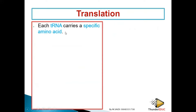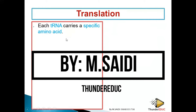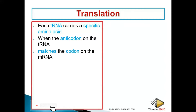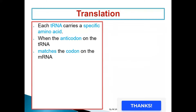Number one: each transfer RNA carries a specific amino acid. It has three bases, and those three bases code for a specific amino acid. These bases are called anticodons. When the anticodons on the transfer RNA match the codons on the messenger RNA, they correspond. The three bases on DNA we call codes, the three bases on the messenger we call codons.